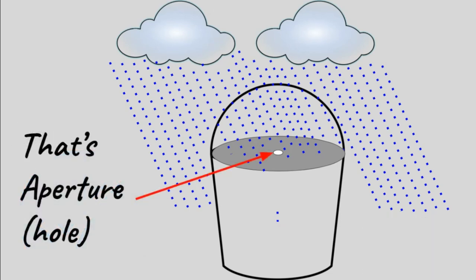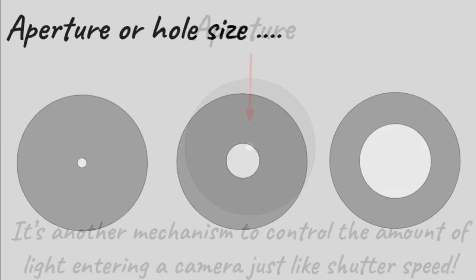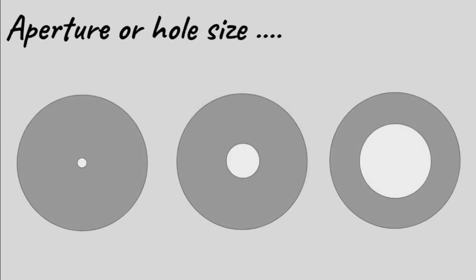That little opening you just made is aperture. Think of aperture as another way to control the amount of light entering a camera. Aperture, or the opening size, is varied in a camera and is measured using the term F number. F number determines the size of the aperture or the hole.